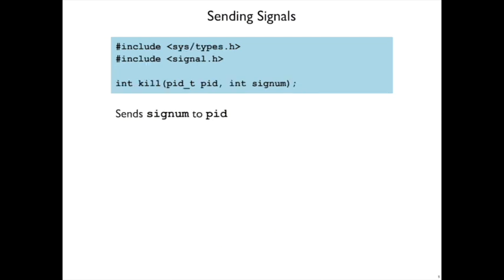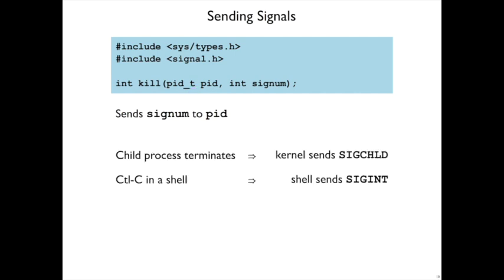On the sending side, the system call for sending a signal is called kill, even though it doesn't always send the kill signal. The general signal handling function is still called kill. It can send any signal number that you want, and it sends it to any process that you're allowed to send a signal to. For example, the kernel effectively uses its own kill function to send SIGCHILD to a parent process when the child process dies. When you type Control-C in a shell, the shell is using the kill function to send SIGINT to the process that's currently running.